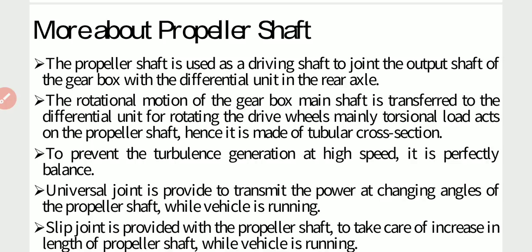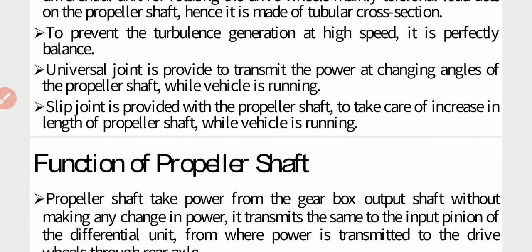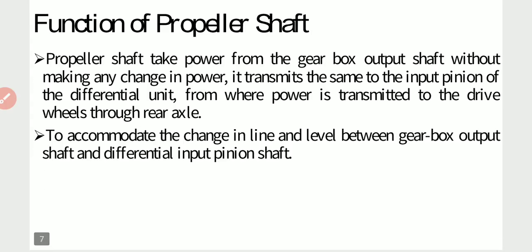The rotational motion of the gearbox main shaft is transferred to the differential unit for rotating the drive wheels. Mainly torsional load acts on the propeller shaft, hence it is made of tubular cross section. To prevent whirling at high speed, it is perfectly balanced. A universal joint is provided to transmit power at changing angles of the propeller shaft while the vehicle is running. A slip joint is provided to take care of the increasing length of the propeller shaft while the vehicle is running. Functions of propeller shaft: it takes power from the gearbox output shaft without change, transmitting it to the differential unit and then to the drive wheels through the rear axle.